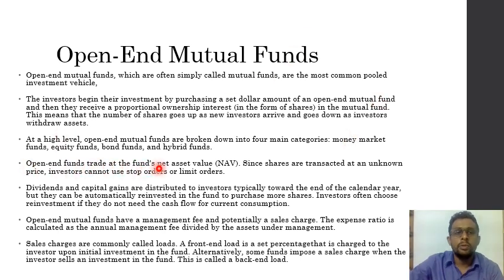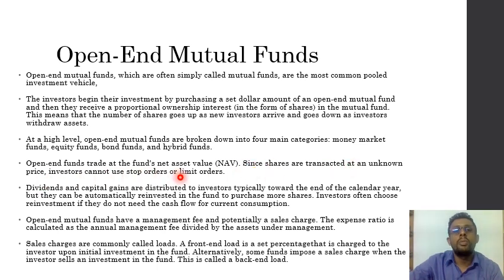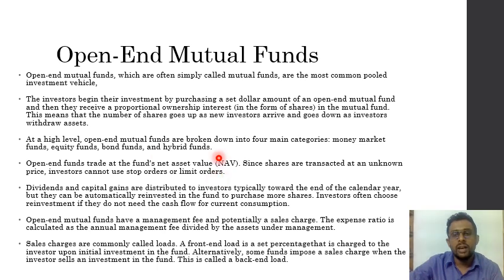Open-ended mutual funds trade at the fund's net asset value, which is assets minus liabilities. Since shares are transacted at an unknown price, investors cannot use stop orders or limit orders. This is because the NAV of a mutual fund is not calculated until 4pm in New York City. If an investor wants to invest at 10am, they will not know the correct NAV for that day and will receive units priced at the 4pm NAV.